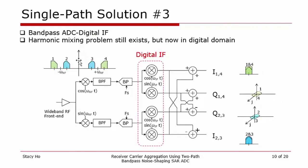A more efficient architecture is proposed here. By making use of a band-pass ADC, the second IF down-conversion can be moved into the digital domain. This is called a single-path digital IF architecture. The advantage is that quadrature mismatch in the second down-conversion can be eliminated since it is done all digitally. The harmonic mixing problem still exists but is now moved into the digital domain. Note that a band-pass filter preceding the band-pass ADCs is now required.